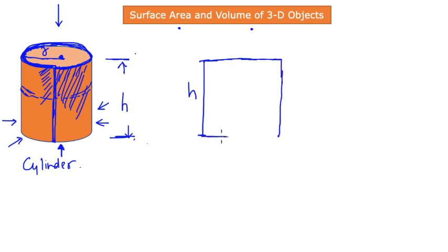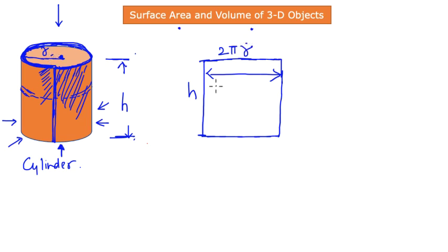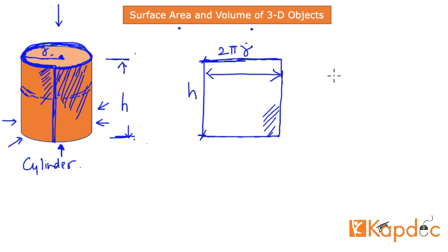That length will be exactly equal to the circumference or perimeter of the circle: 2πr, where r is the radius of the cylinder. So now you have two dimensions of this rectangle — the height h and the length 2πr — and the surface area of this rectangle is 2πr times h.